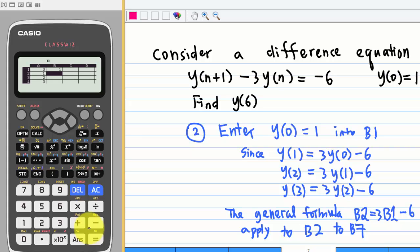Then on cell B2 we enter the formula. To do this we need to press option, fill formula for option 1, then enter the formula. In this case we know B2=3 times alpha B1-6. Then press equal. This formula applies from B2 all the way to B7. So let me change the last value to 7 and press equal. Then press equal again.